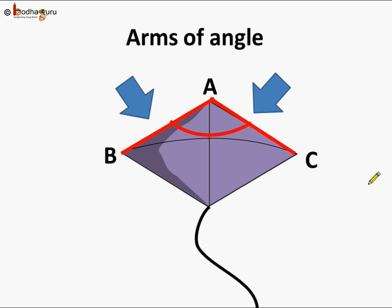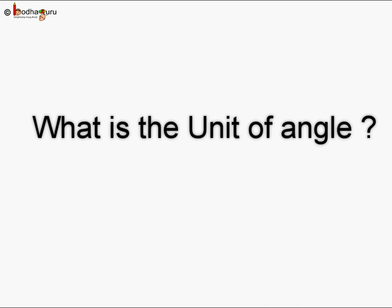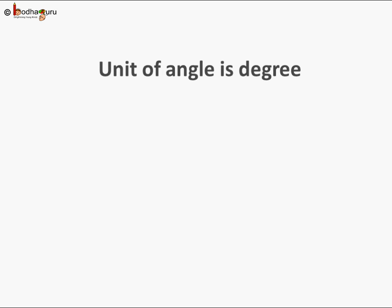Understood? Now, these two straight lines meet at this point and make an angle. The line segments AB and AC which meet at a point and make an angle are called the arms of the angle. So line segments AB and AC are called the arms of the angle. And what is an angle? The measure of the angle is equal to the turn between the two arms that form the angle. This is the angle made by these two lines. Now, what is the unit of angle? The unit of angle is degree.